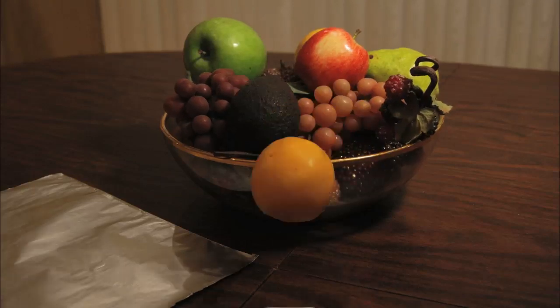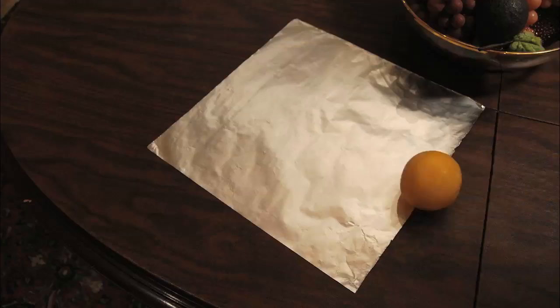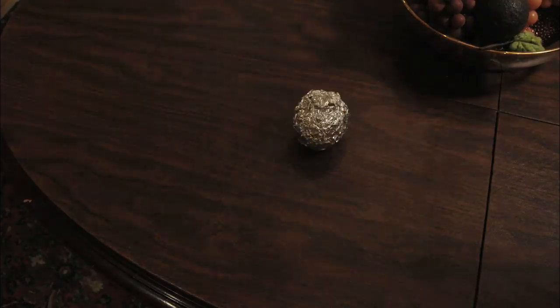But a globe is a sphere, not a cylinder. Can we bend the foil into this shape? Not without crumpling.